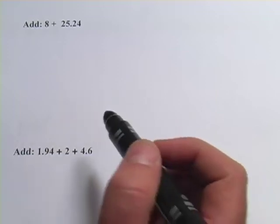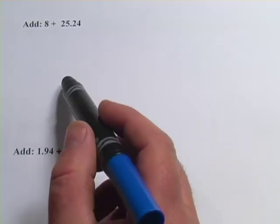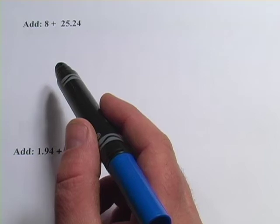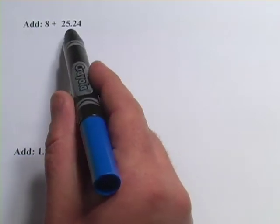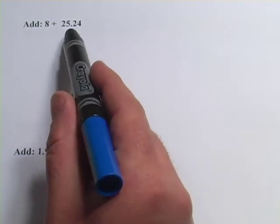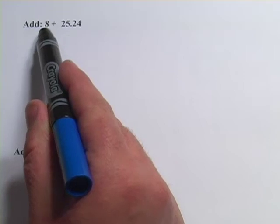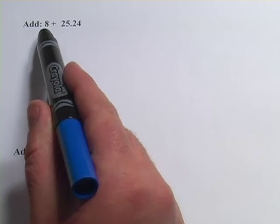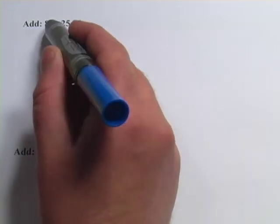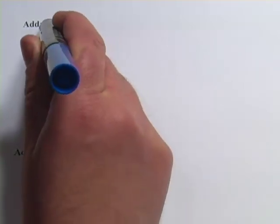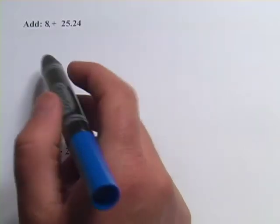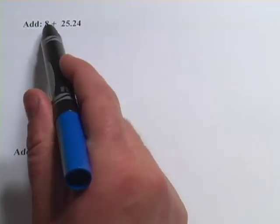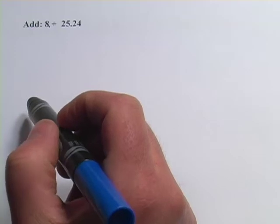In these problems, we're adding and subtracting with decimals and whole numbers. When we were adding with decimals, I mentioned that you just need to line the decimal points up. Well, with the whole number, it doesn't look like there's a decimal point there. The decimal point is always right after it — 8 point whatever, in this case, 8.0. So the point is right after the 8.